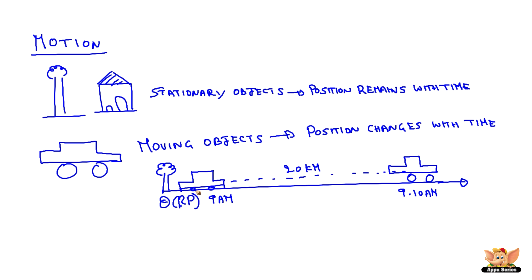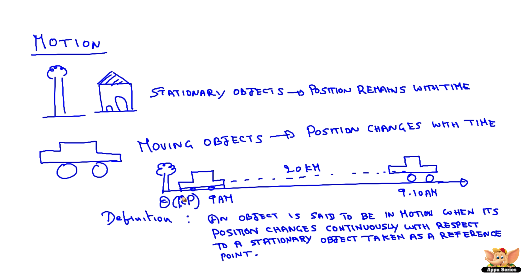A moving object, the car, started at 9 am, reached its position at 9:10 am, and covered a distance of 20 km. So from this, if we see what is the definition of motion: an object is said to be in motion when its position changes continuously with respect to a stationary object taken as a reference point.